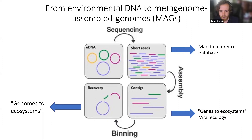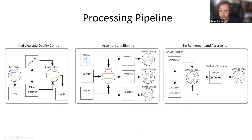Once we have our genomes, we can take a genomes-to-ecosystems approach. This differs from genes-to-ecosystems in that we use the entire organism to infer metabolisms in the environment, looking at pathways within the organism to refine our understanding of which organisms and metabolisms are important. In the genes-to-ecosystems approach we don't know who is doing what, but in the genome-to-ecosystems approach we can specifically identify a lineage completing a certain metabolism.